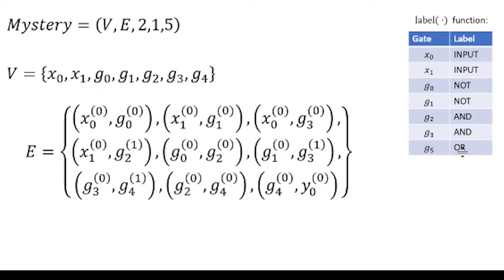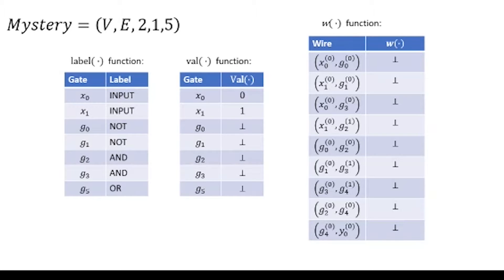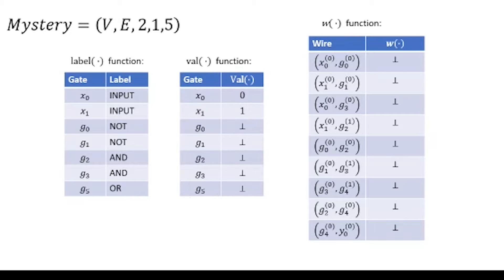We're going to go through and work on executing this circuit in the case where our input is 0, 1. To work through this, we have two functions that are the bread and butter for how execution works: the w function that tells us the value that an edge is carrying, and the val function that tells us what a gate is outputting. We start out with our input gates — x0 and x1 are preloaded with our input bits.